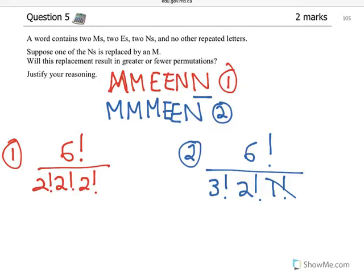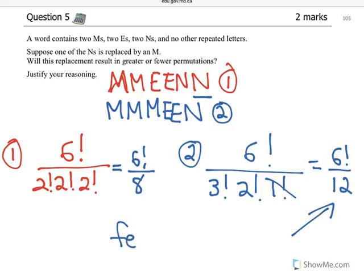So we can look at this a couple different ways. Which one's bigger? You can do it in your calculator. Or we know that this is six factorial over two times two times two, which is eight. And this is six factorial over three times two times two, which is twelve. The denominator is bigger on this one, so that is going to make the number lower, resulting in fewer permutations.